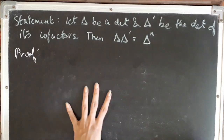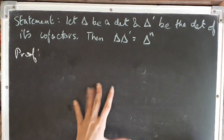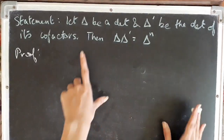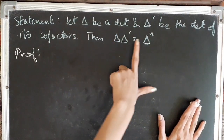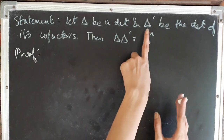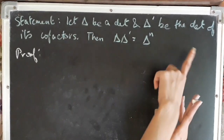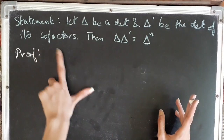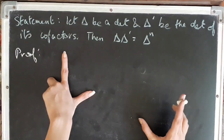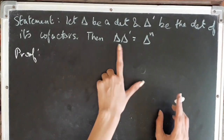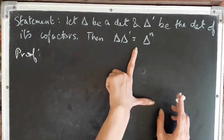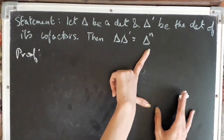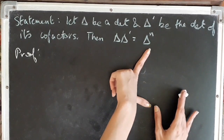The statement of Jacobi's theorem is: let delta be a determinant and delta-dash be the determinant of its cofactors. Then delta multiplied by delta-dash equals delta to the power n.